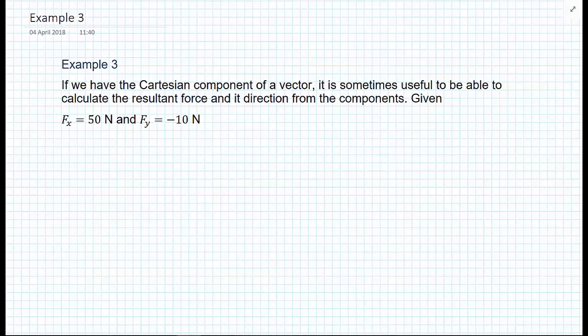In this example, we've been given the values of two Cartesian vectors, Fx, which equals 50 Newtons, and Fy, which equals minus 10 Newtons, and we're asked to calculate the resultant force from these two Cartesian components.